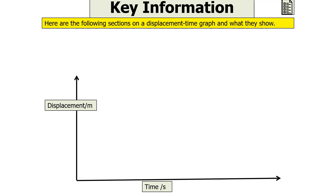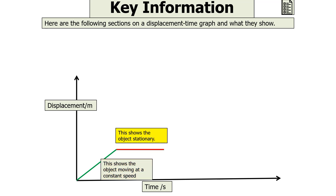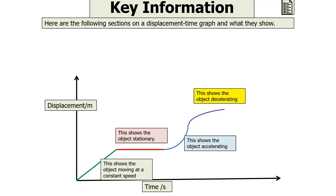Here are the following sections on a displacement time graph and what they show. A straight diagonal line shows an object moving at constant speed. A flat horizontal line shows an object which is stationary. A curve bending upward shows an object which is accelerating. And a curve bending the other way shows an object that is decelerating.